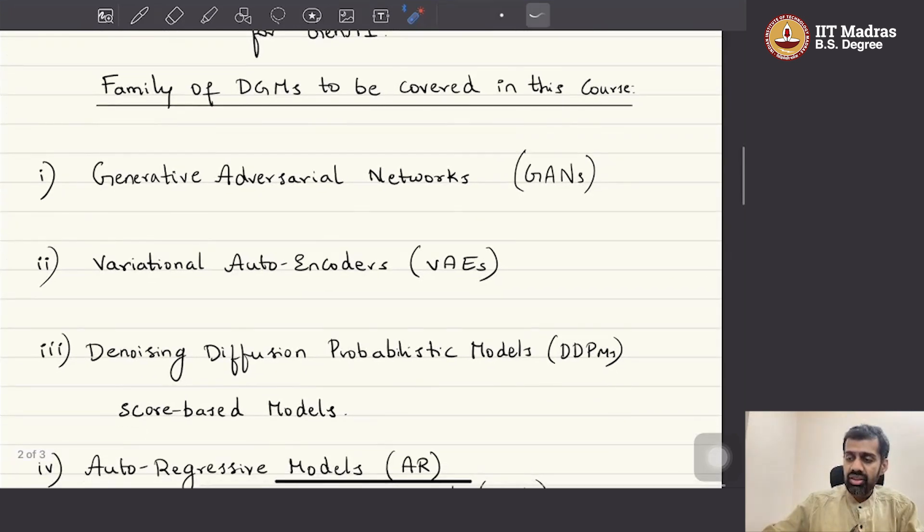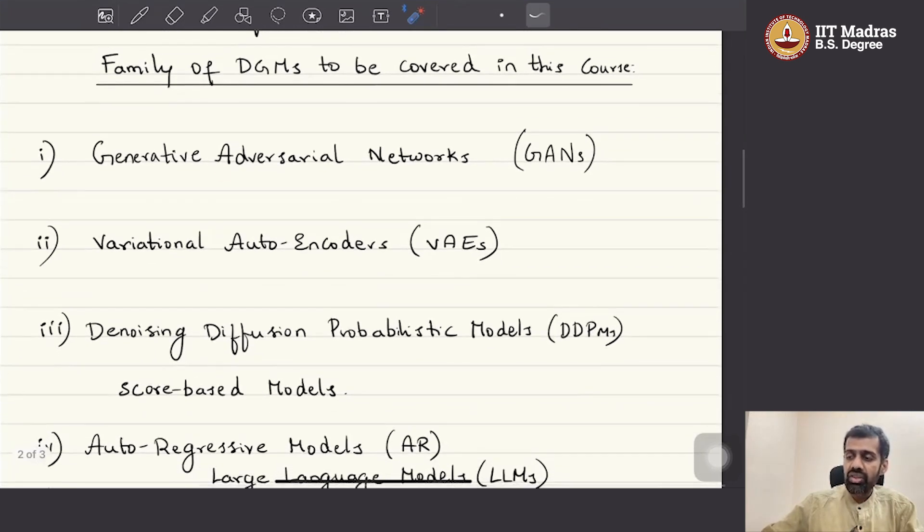We will first start with the Adversarial Learning and Generative Adversarial Networks, also known as GANs in short. This, even though not the current state-of-the-art for several of the tasks, would set a very solid footing on the principles of working of generative modeling. So, that's why we will start out with GANs as the first topic that we will be covering in this course.